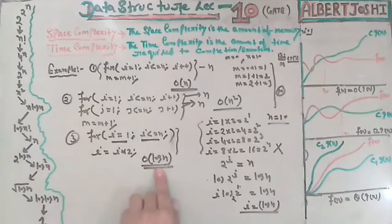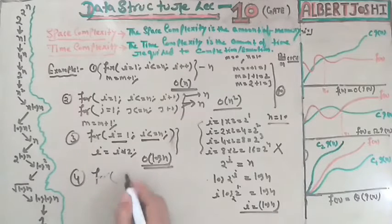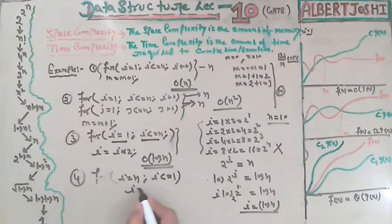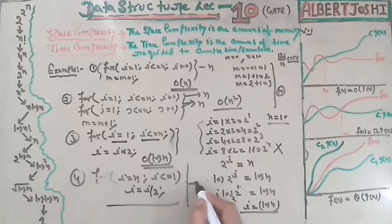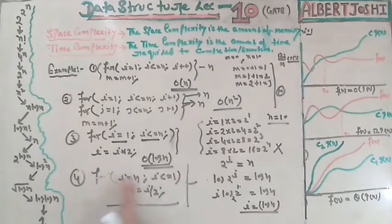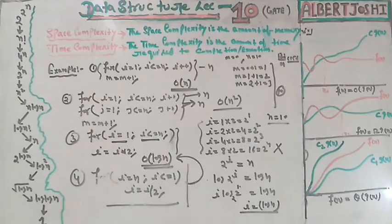Similarly, for the loop written as for i = n, i greater than or equal to 1, with i = i / 2 — you are decreasing i each time. Using the same method, for this condition also your time complexity is O(log n).